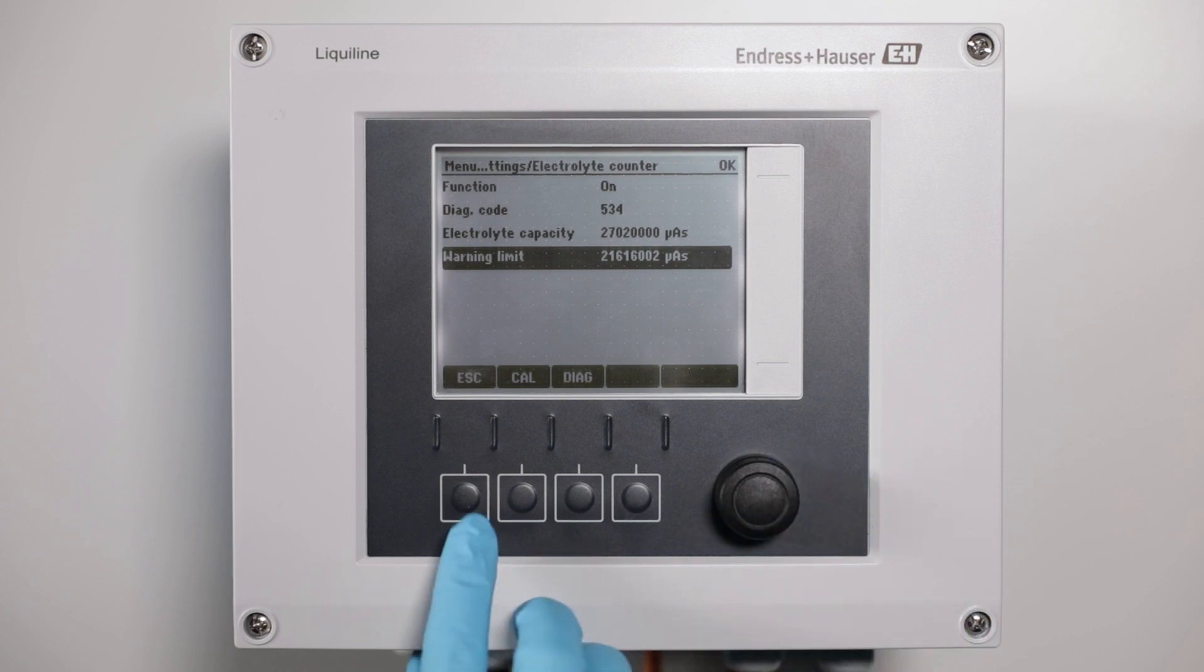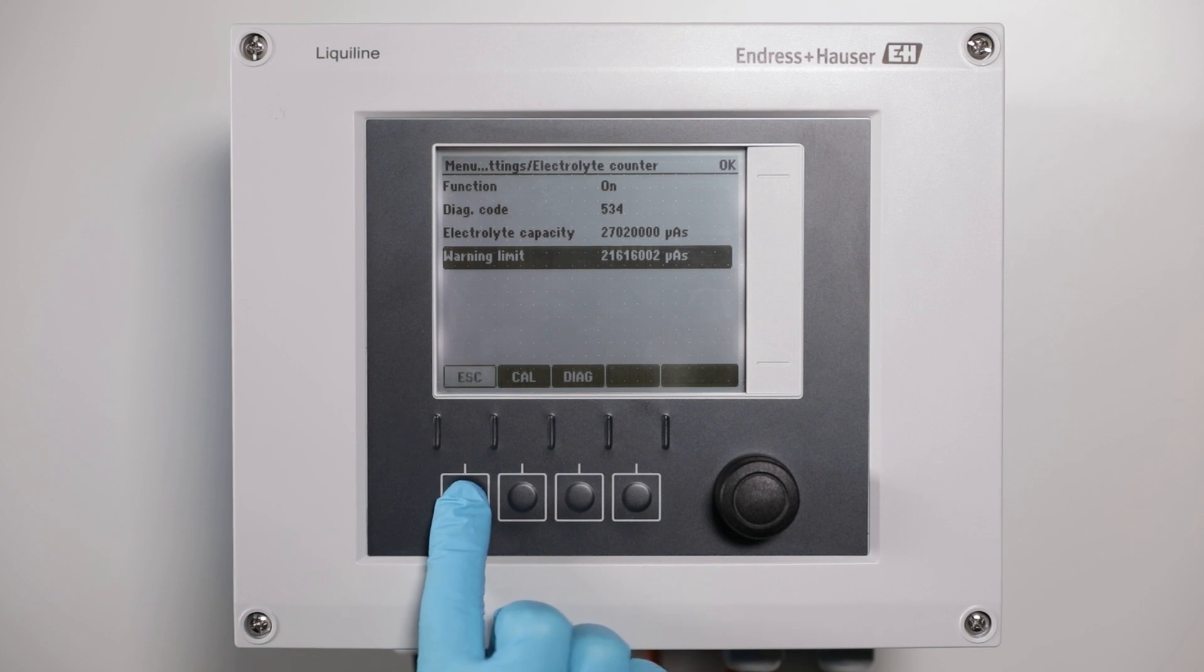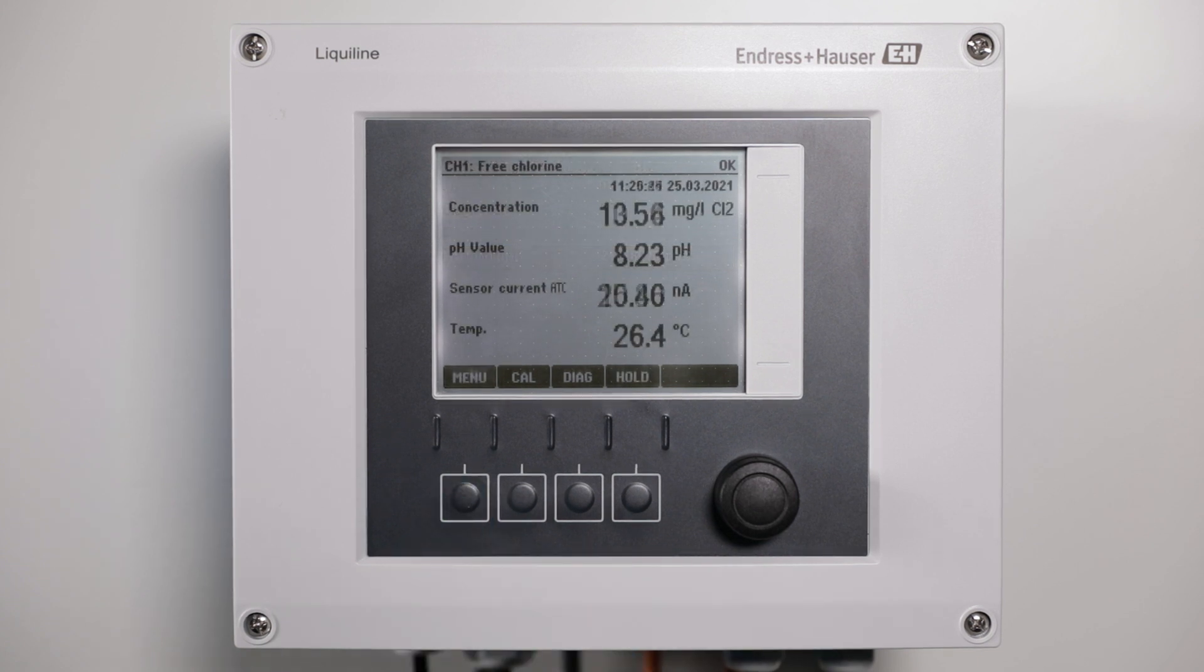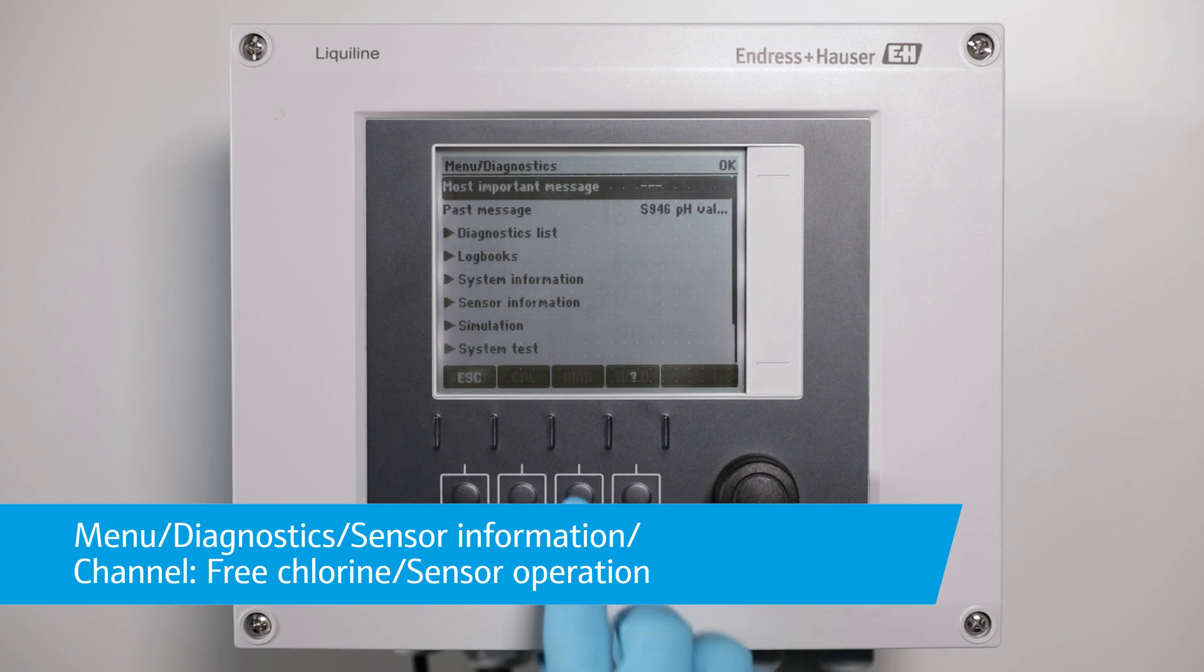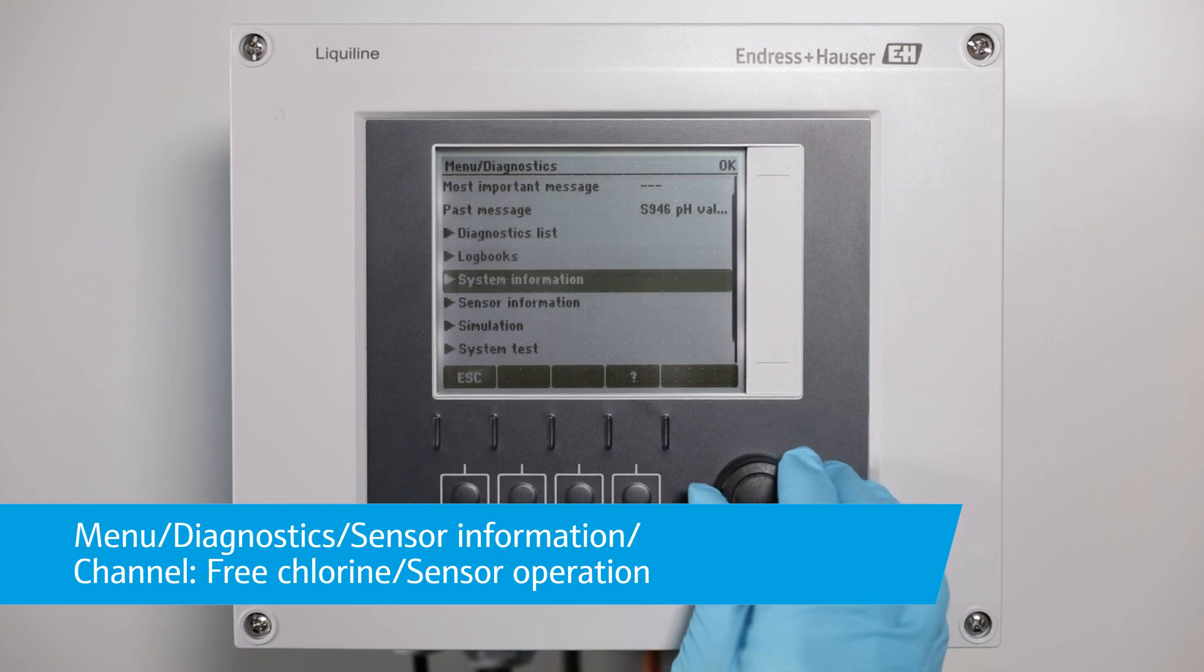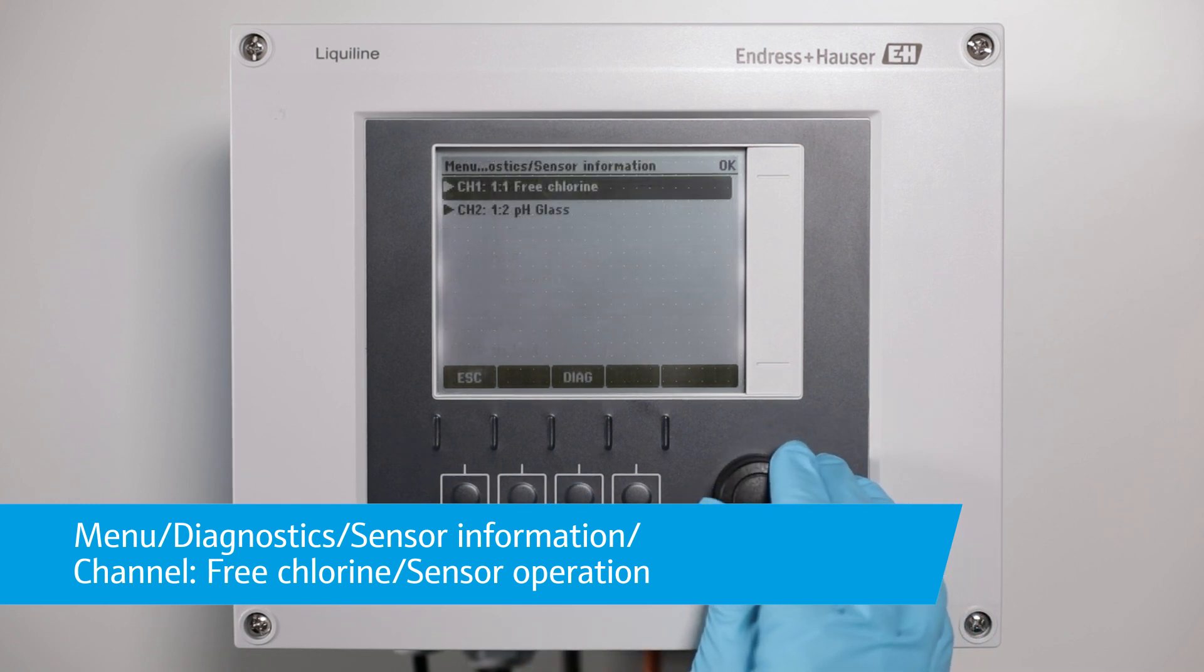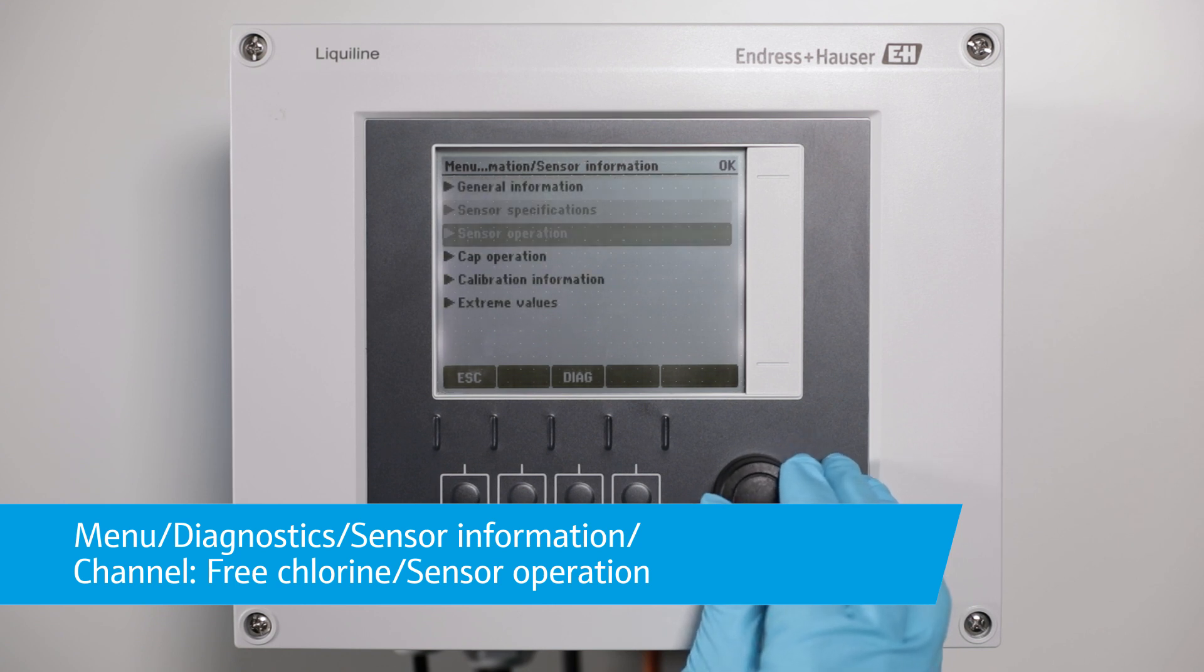Per default, the warning message appears when 80% of the electrolyte capacity is reached. To read out the actual electrolyte consumption, check the charge given by the sensor information in the diagnostic menu.